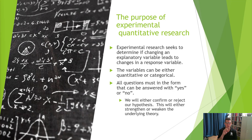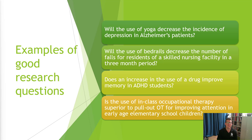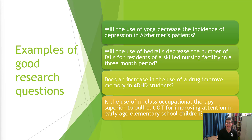When we ask experimental quantitative research questions, we're looking for questions that can be answered with yes and no. Examples: Will the use of yoga decrease the incidence of depression in Alzheimer's patients? Will the use of bed rails decrease the number of falls for skilled nursing facility residents in a three-month period? Does an increase in drug use improve memory in ADHD students? Is in-class occupational therapy superior to pull-out OT for improving attention in early elementary school children? For each, identify the explanatory variable and the response variable — and notice they can all be answered yes or no.